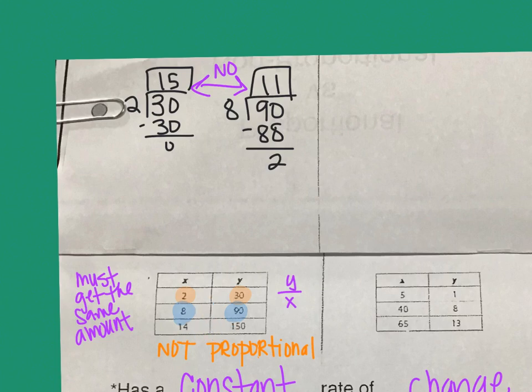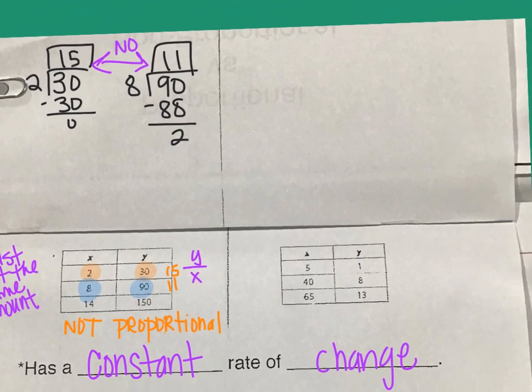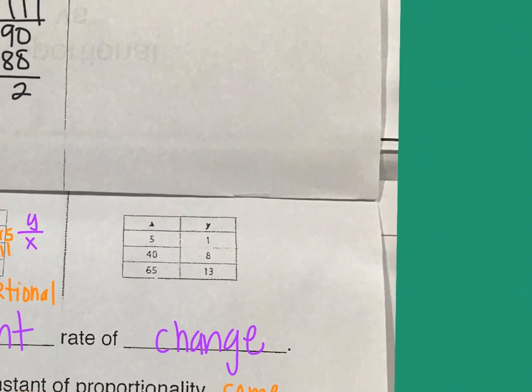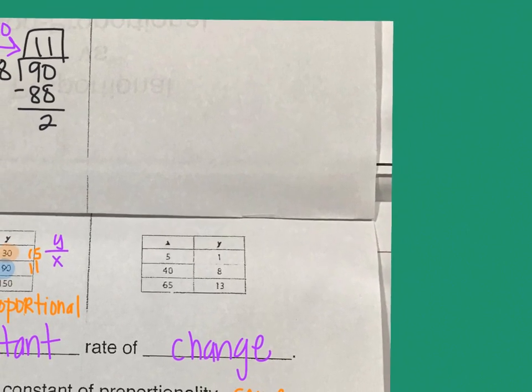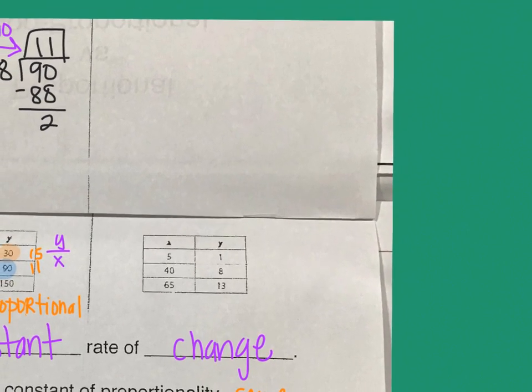I could come back down here and put that this one got a 15 and this one got an 11, so they don't match. But just by looking at them up here, my division problem, I already can see. I'm going to scoot over and zoom in on this second table. Again, I'm looking to see if they're the same.